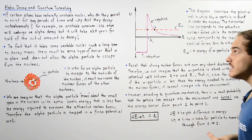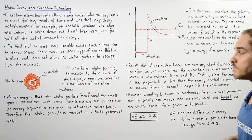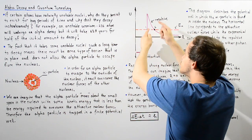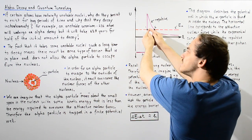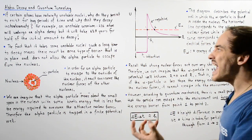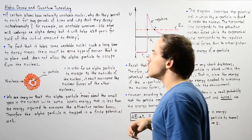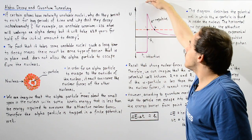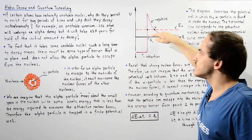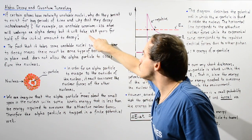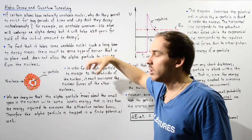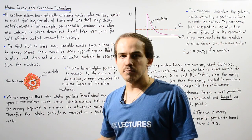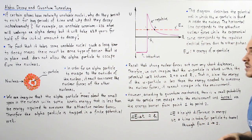This idea is known as quantum tunneling. The higher the energy barrier and the longer the tunneling distance, the longer it takes the unstable nucleus to decay. Therefore, the greater the barrier and distance, the more time it will take the unstable atom to decay into a more stable atom and release the alpha particle.